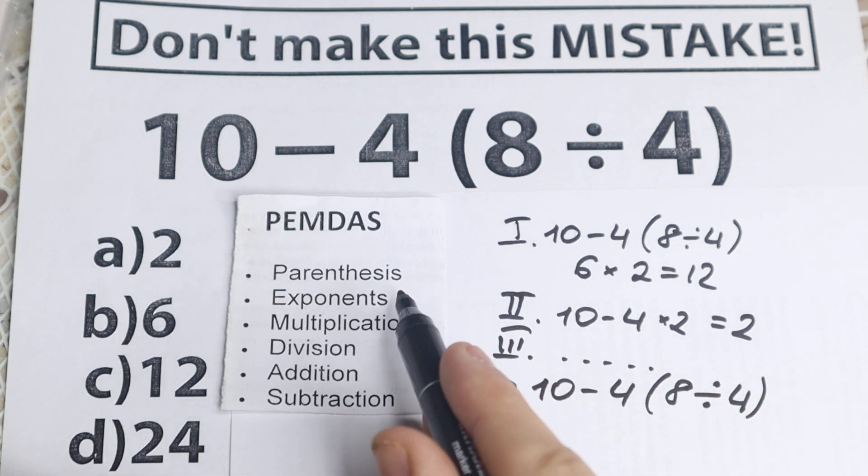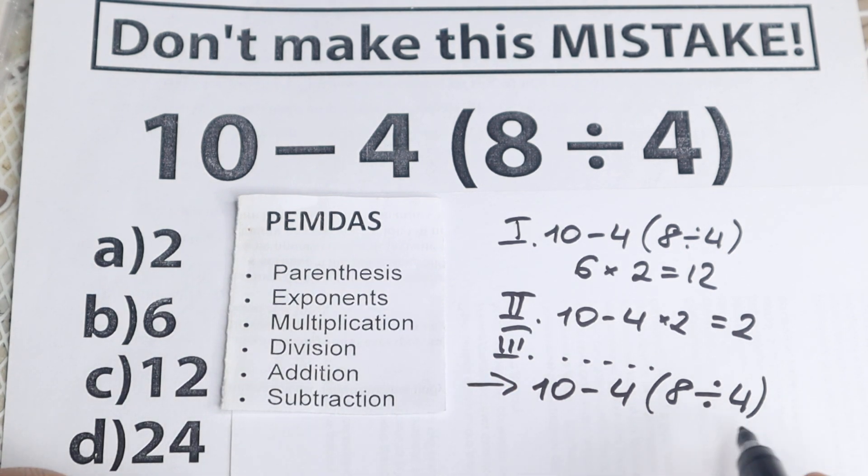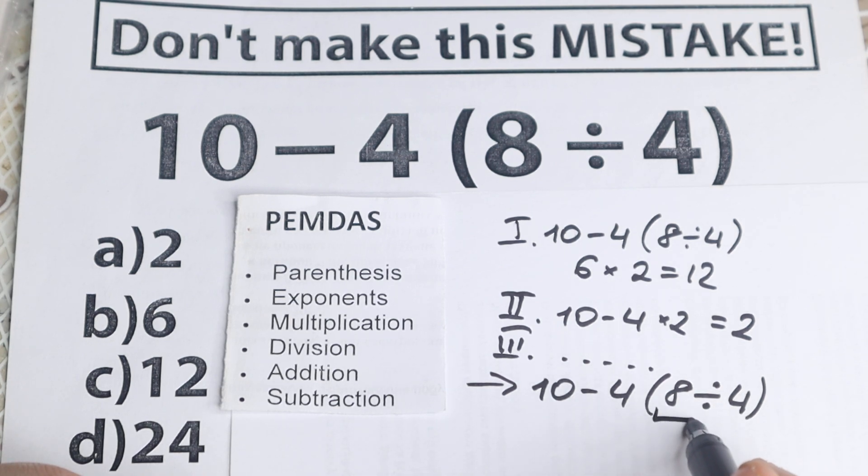What is the first step according to PEMDAS? According to PEMDAS the first step is parentheses, and in parentheses we have division, so doesn't matter, we have our parentheses. So 8 divided by 4 equals 2. So as a result I just want to rewrite this problem right here on the bottom, so 10 minus 4 times 2. We have this expression. Let's go next.